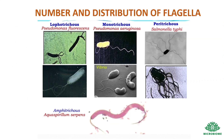Next, the number and distribution of flagella. In lophotrichous bacteria, a tuft of flagella is present at one pole — example: Pseudomonas fluorescens. In monotrichous bacteria, a single flagellum occurs at one pole — example: Pseudomonas aeruginosa. In peritrichous bacteria, flagella are present all over the cell — example: Salmonella typhi. In amphitrichous bacteria, flagella are present at both poles — example: Aquaspirillum serpens.